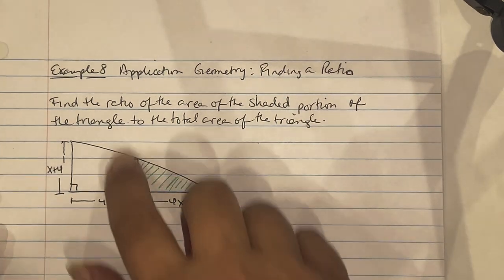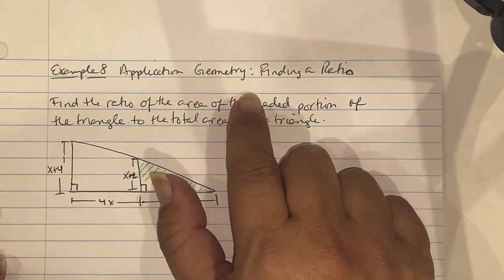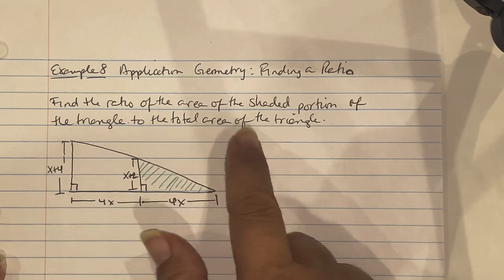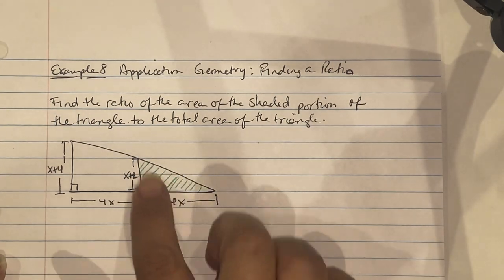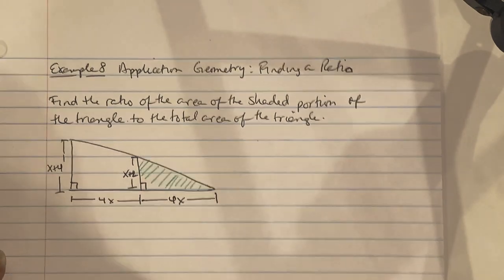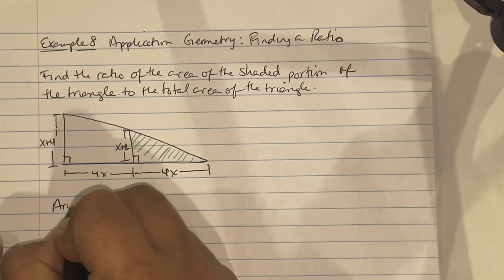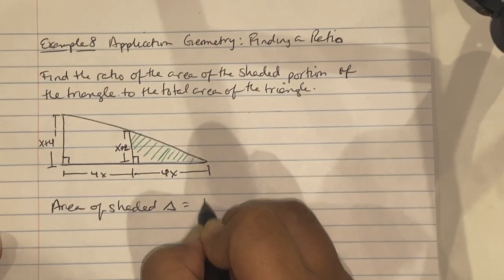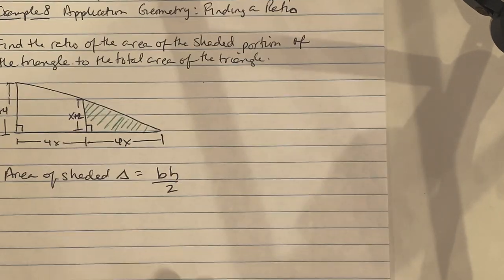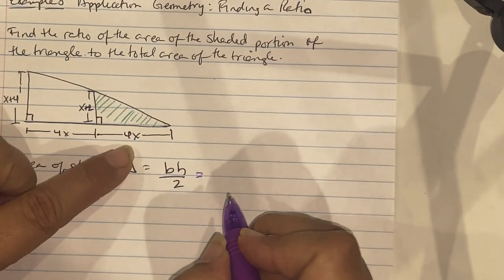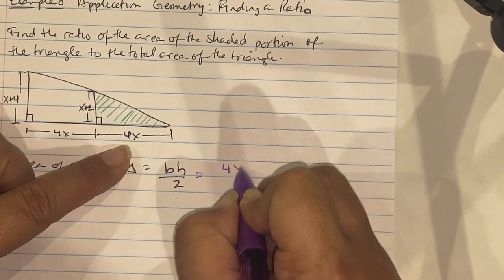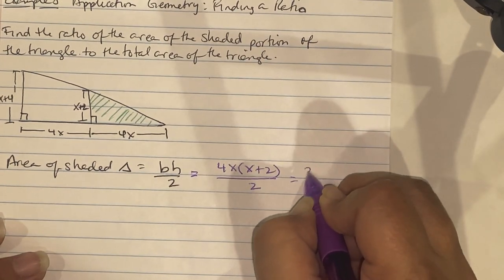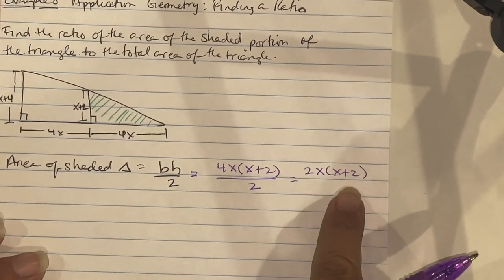Example A is a geometry application: find the ratio of the area of the shaded triangle to the total area of the triangle. There are two triangles — shaded and entire. Area equals base times height divided by 2. The shaded triangle has base 4x and height x plus 2, giving area 2x times x plus 2.